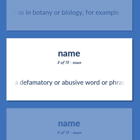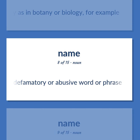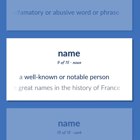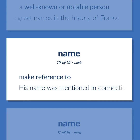Name: A defamatory or abusive word or phrase. A well-known or notable person — 'They studied all the great names in the history of France.' Make reference to — 'His name was mentioned in connection with the invention.'